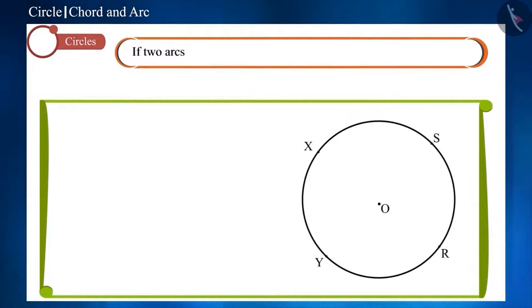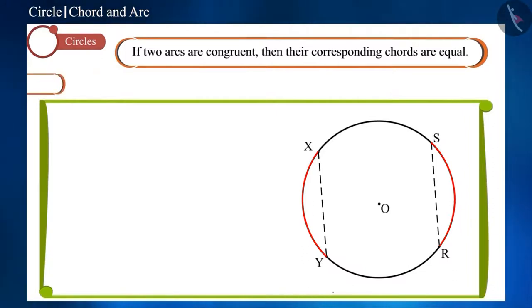Friends, if we see the converse of this statement, that is, if two arcs are congruent, then their corresponding chords will be equal. What do you think about this statement? Will this also be true?